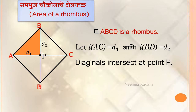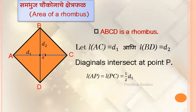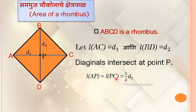The areas of all four triangles are equal. Now, length AP equals length PC equals half of AC. But AC is D1, because the diagonals intersect at point P and we know the property that diagonals of a rhombus bisect each other. Therefore, AP equals PC equals half D1.